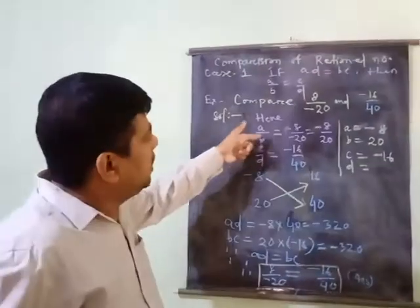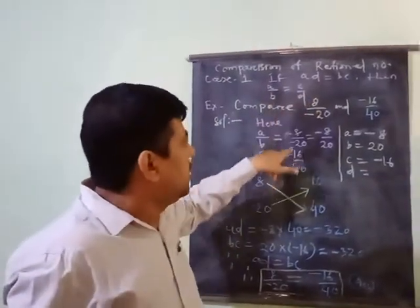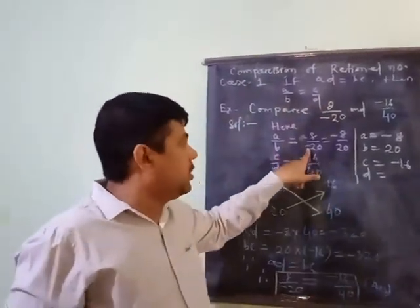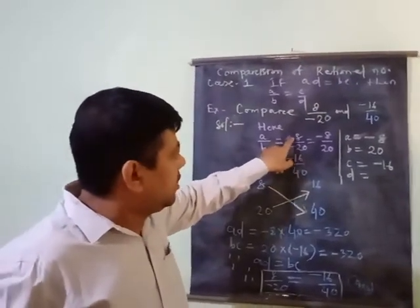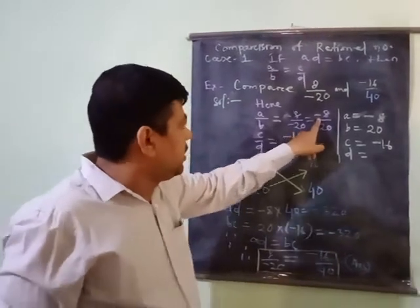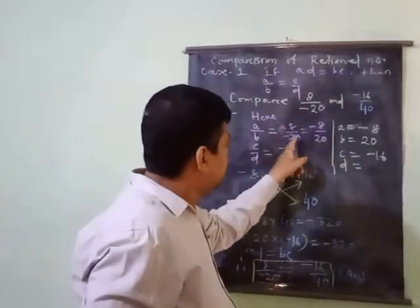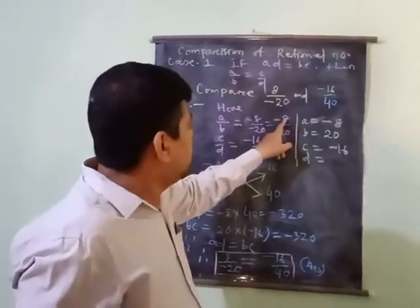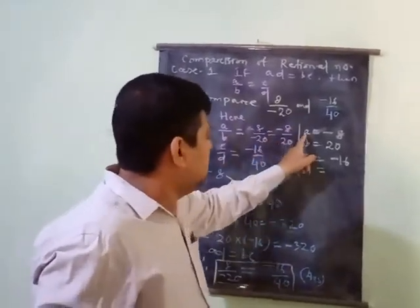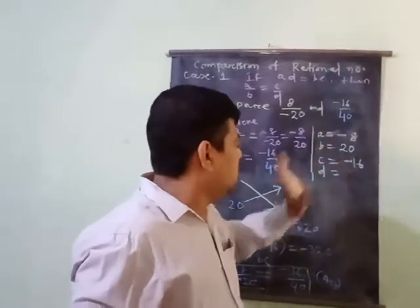Now A upon B is equal to 8 divided by minus 20. You know already negative sign should not be in the denominator, so the negative sign has been shifted to the numerator by the process of division of signs. Here plus divided by minus is minus, so 8 by 20 becomes minus 8 by 20. So here A is equal to minus 8, B is equal to 20.